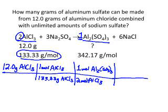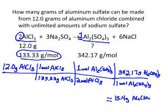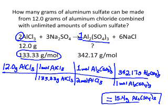Now, almost done. I want to go from moles of aluminum sulfate to grams, because we want to end up in grams — but we always have to go through moles to compare two substances. Our molar mass for one mole is 342.17 grams of aluminum sulfate. Using the calculator, we multiply 12 times 342.17 divided by 133 divided by 2, with three sig figs. Our answer is 15.9 grams of aluminum sulfate. And that is how you solve a grams-to-grams problem.